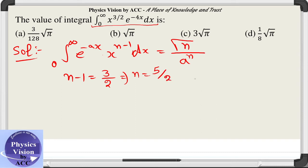By substituting these values we get our integral given by gamma 5 by 2 divided by a which is 4 power 5 by 2. Gamma 5 by 2 is 3 by 2 gamma 3 by 2.